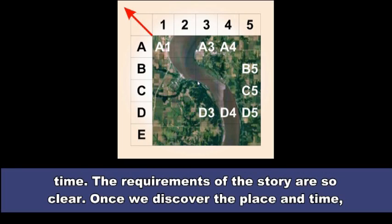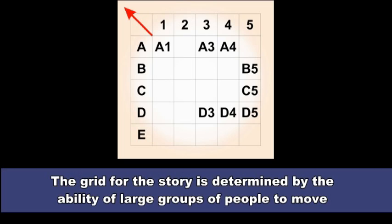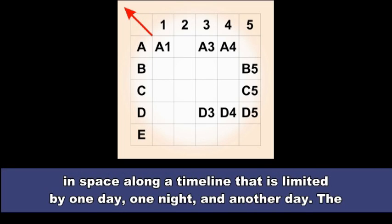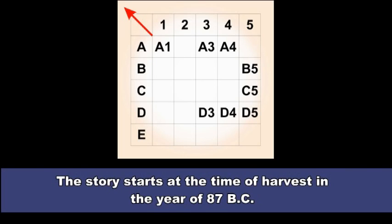Once we discover the place and time, there is no other geography in the world that will satisfy the physical requirements for the Battle of Zarahemla. The grid for the story is determined by the ability of large groups of people to move in space along a timeline that is limited by one day, one night, and another day. The story is then set within the grid of 5 miles by 5 miles. The story starts at the time of harvest in the year of 87 BC.